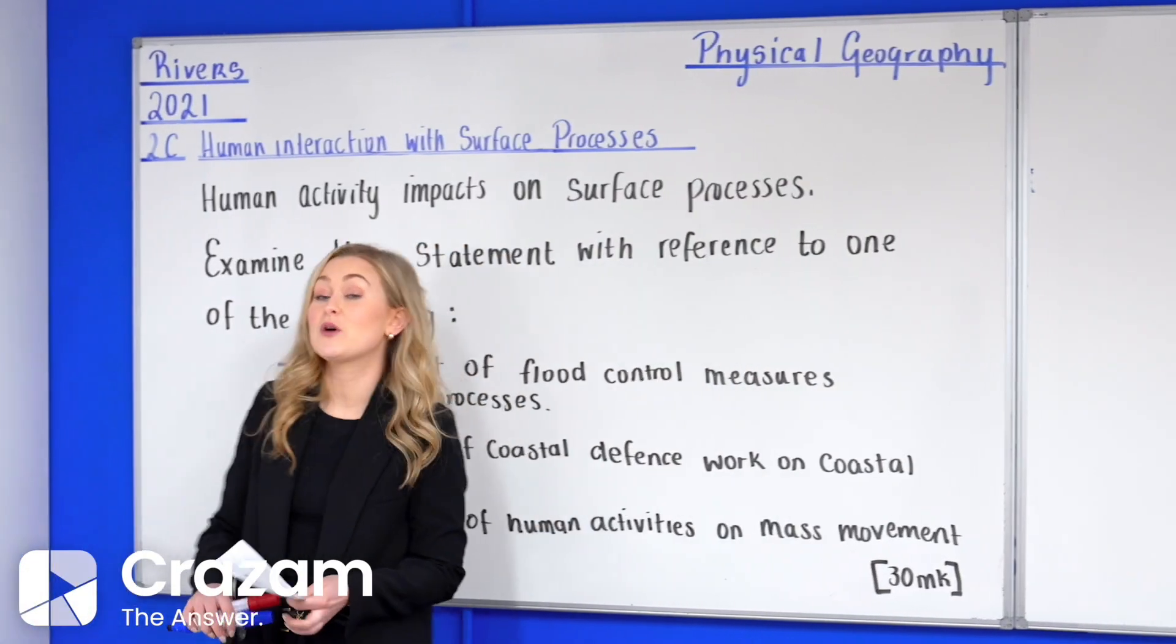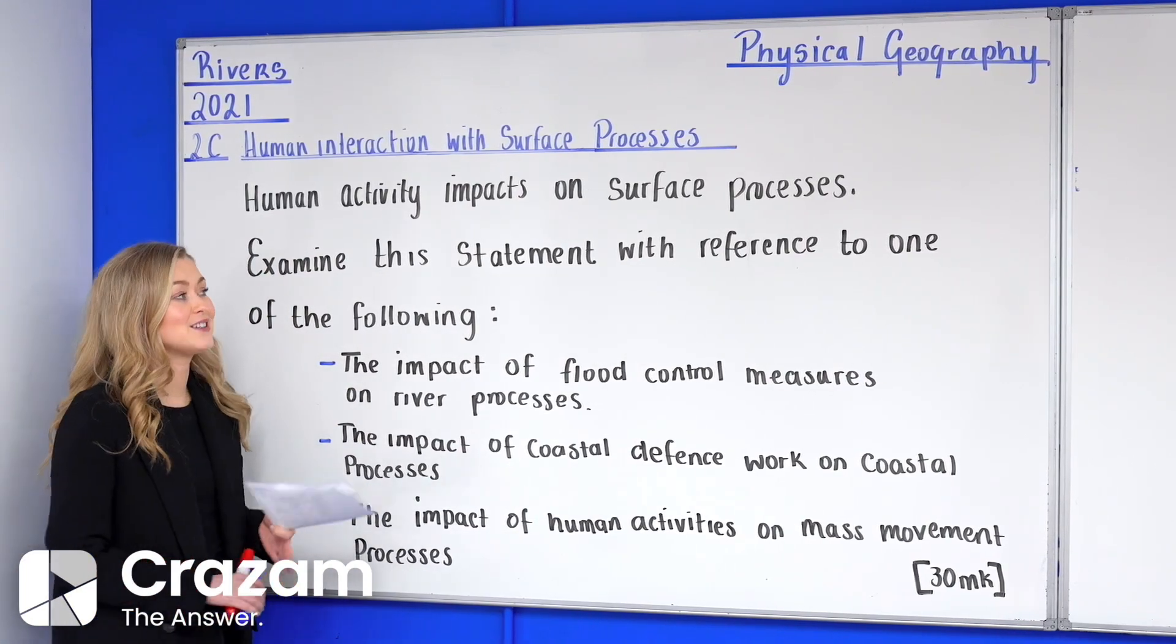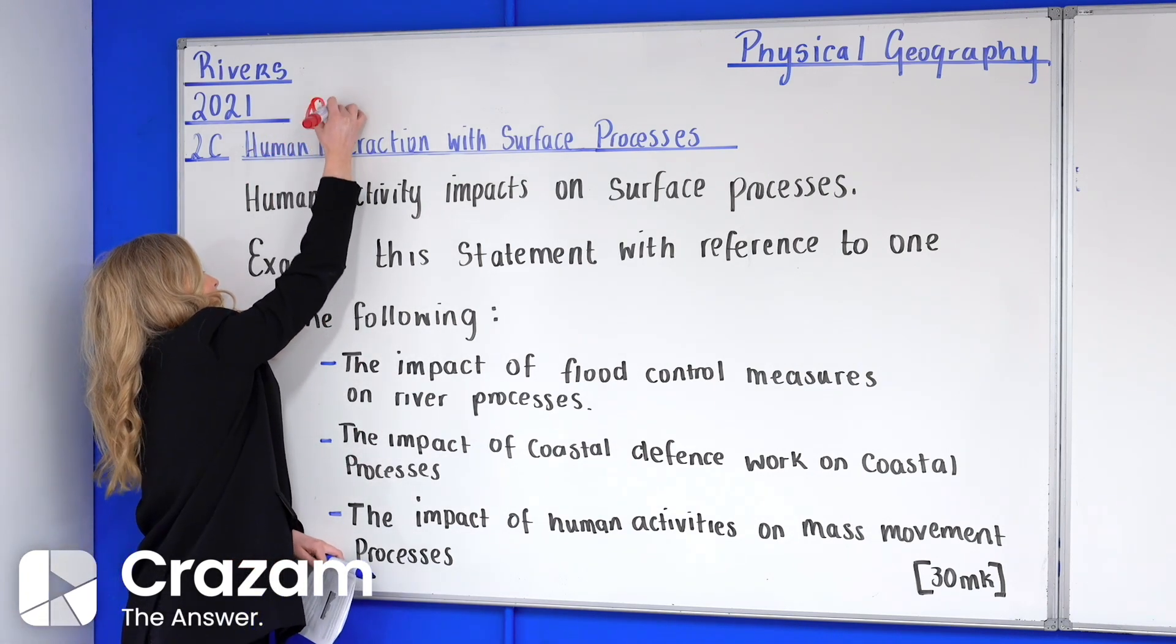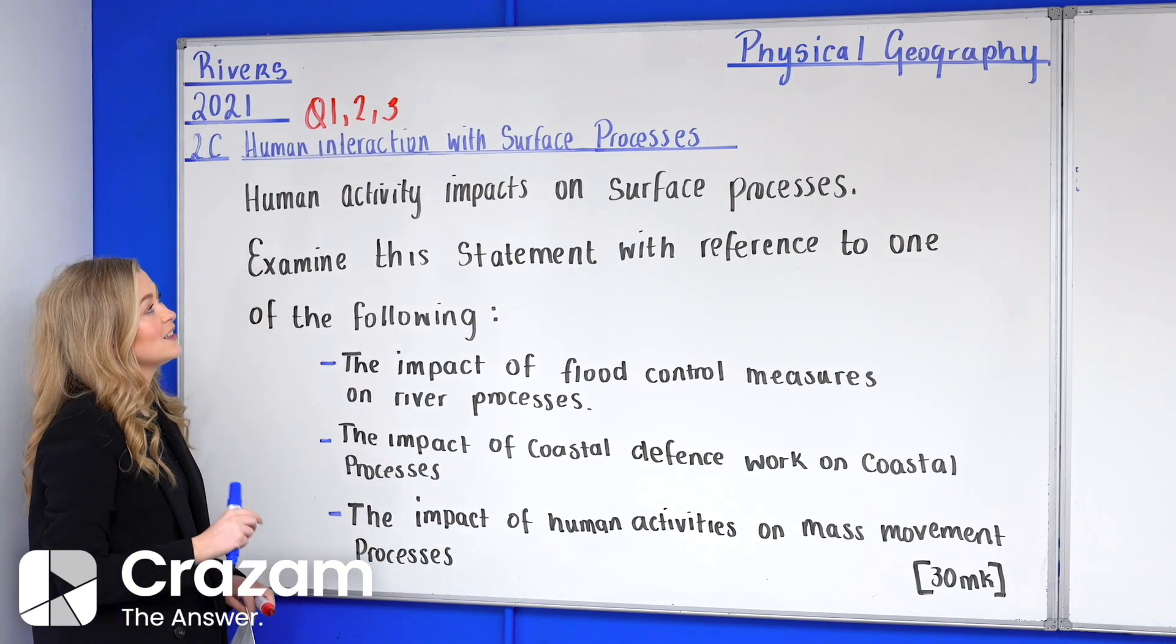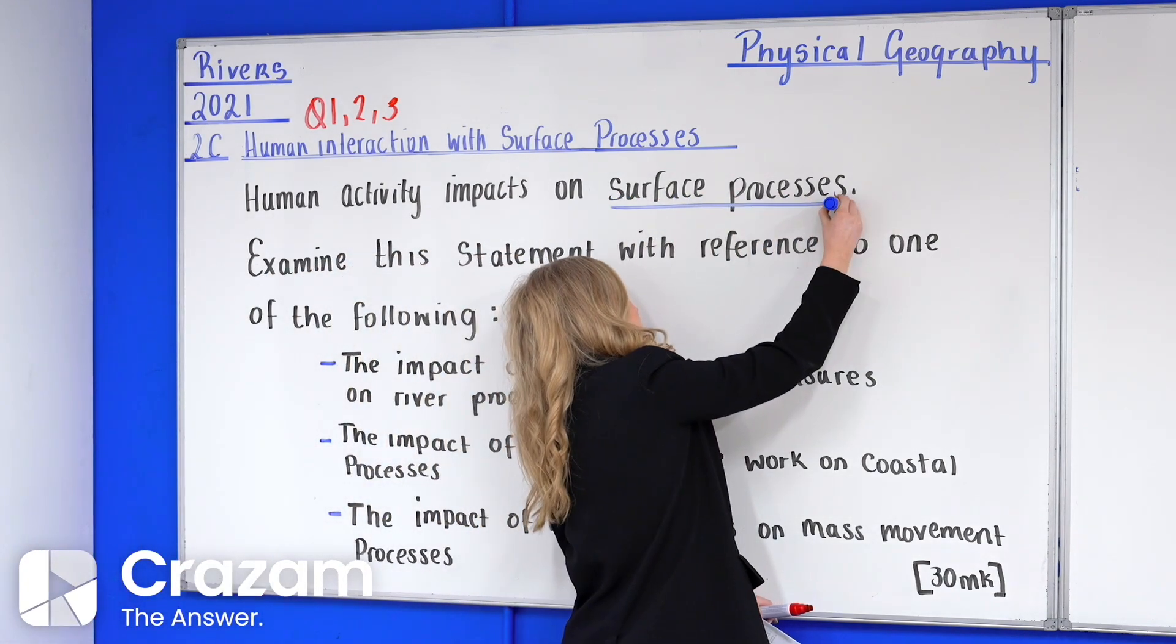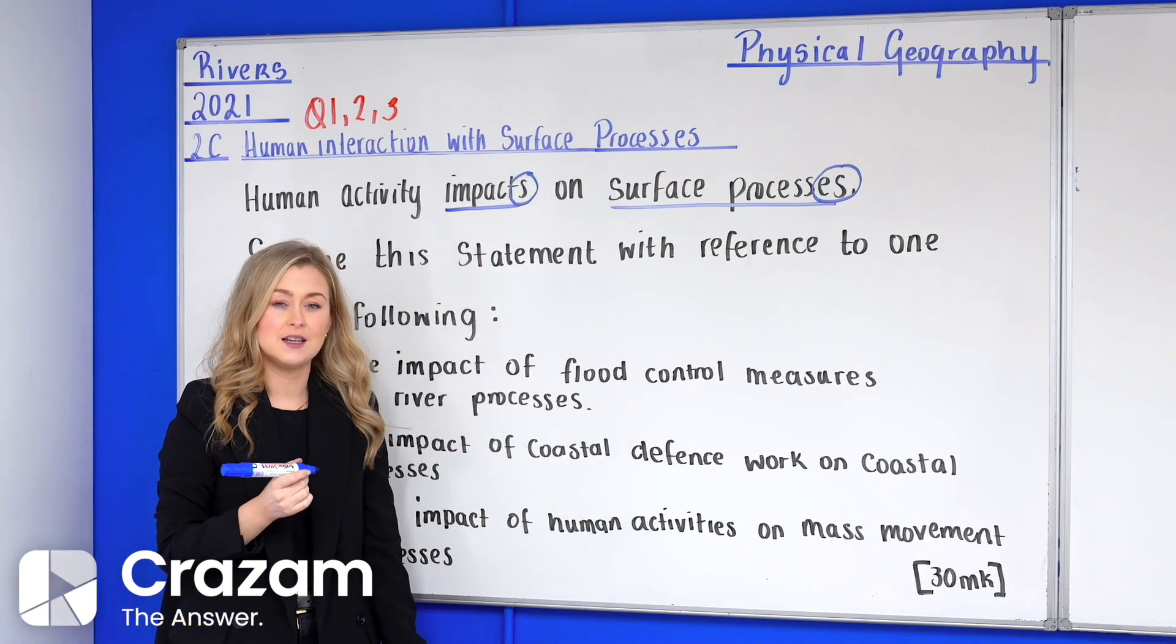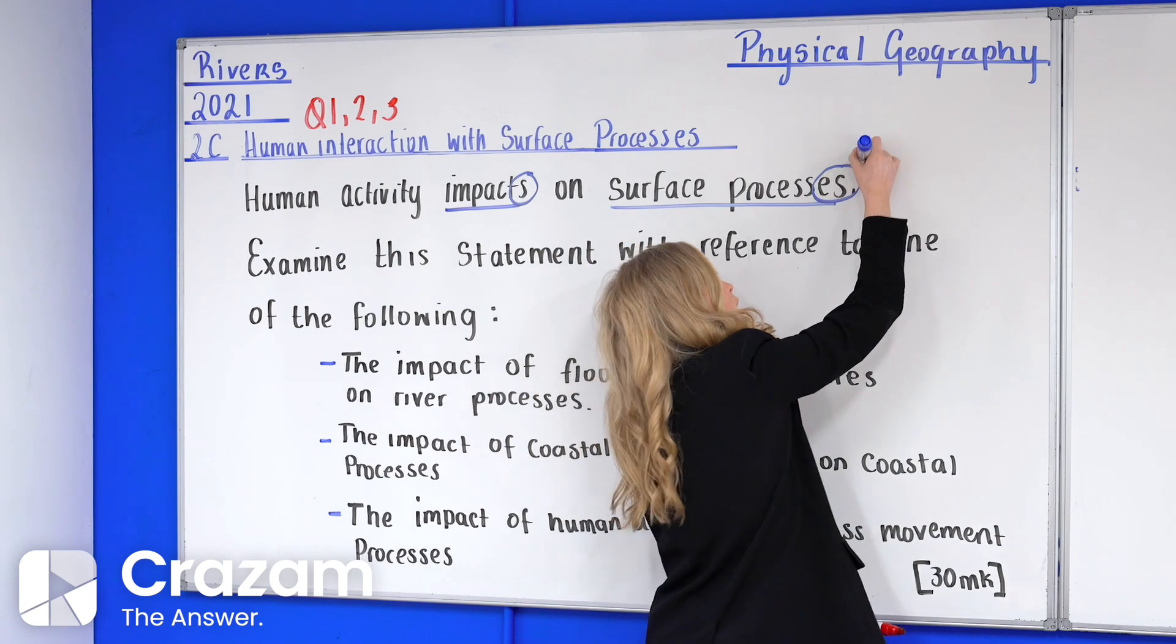Before getting started it's really important for you to take a little bit of an opportunity to actually read down through the question yourself and to dissect it. We're asked humans impact or human activity impacts the surface processes. We want to highlight the word surface processes circle the ES. They're asking us to look at the impacts on surface processes.